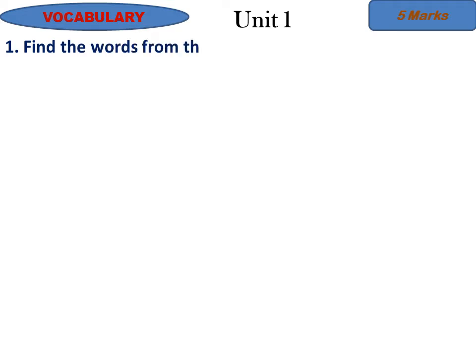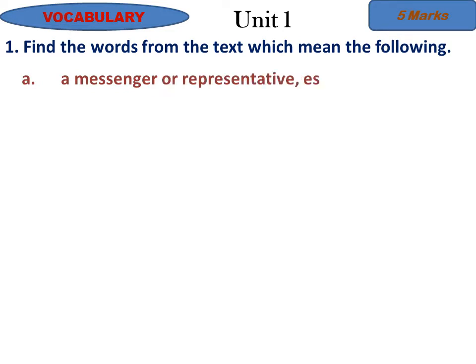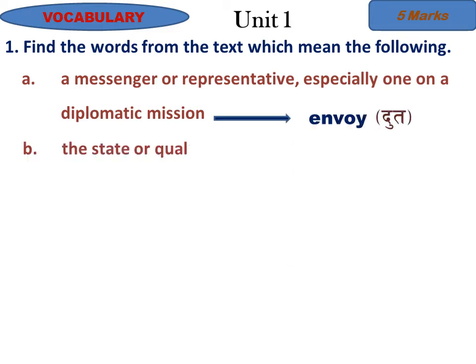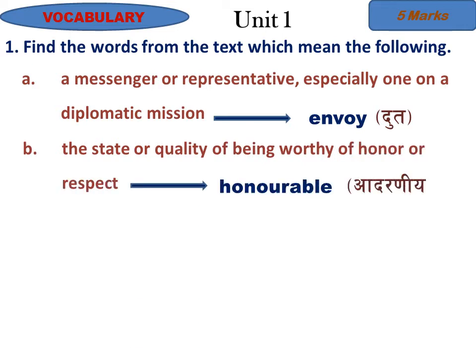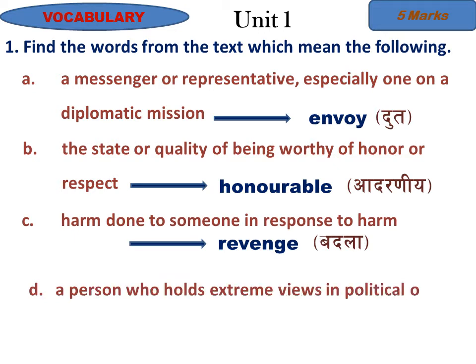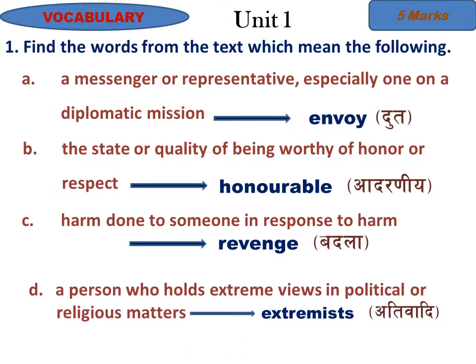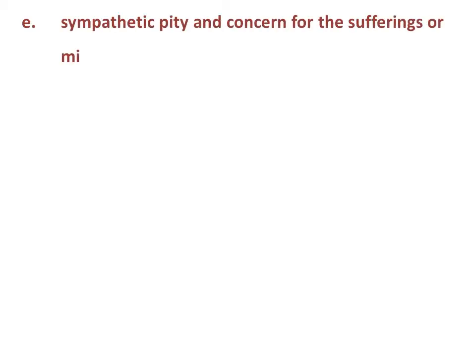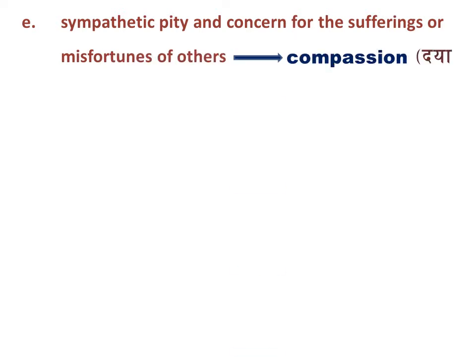Part One Vocabulary, Unit One — five marks question: Find the words from the text which mean the following. A: A messenger or representative, especially one on a diplomatic mission — this is 'envoy'. B: The state or quality of being worthy of honor or respect — this is 'honorable'. C: Harm done to someone in response to harm — this is 'revenge'. D: A person who holds extreme views in political or religious matters — this is 'extremist'. E: Sympathetic pity and concern for the sufferings or misfortunes of others — this is 'compassion'.